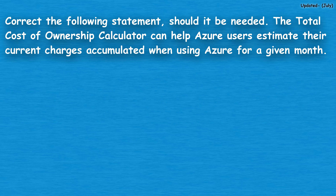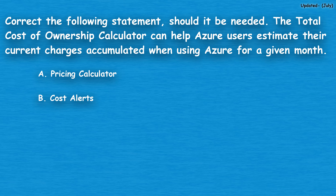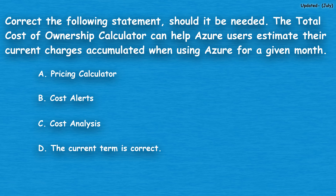Question number 21. Correct the following statement, should it be needed. The total cost of ownership calculator can help Azure users estimate their current charges accumulated when using Azure for a given month. Option A: pricing calculator. Option B: cost alerts. Option C: cost analysis. Option D: the current term is correct.